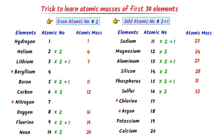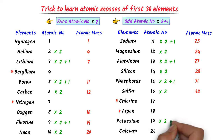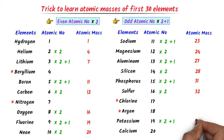We know that chlorine and argon are both exception cases, so I leave them. The atomic number of potassium is 19. I write 19 × 2 + 1. I get 39.